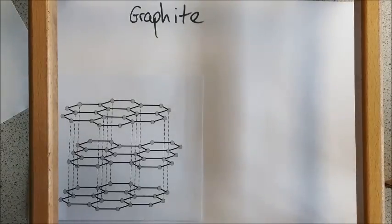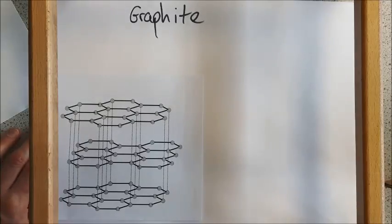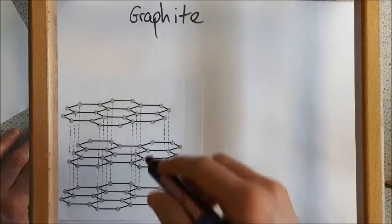This video is looking at the structure and bonding in graphite and linking that to its properties. Similar to diamond, graphite is made entirely of carbon atoms.